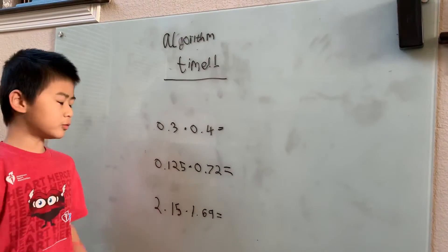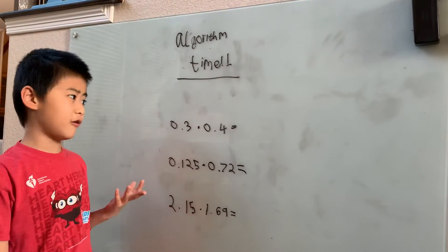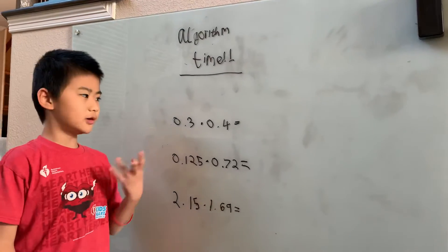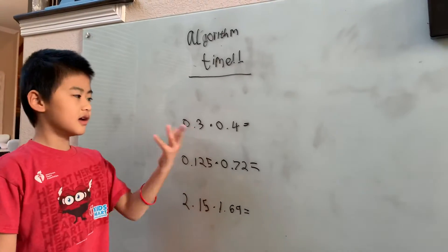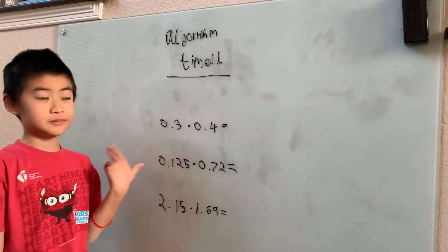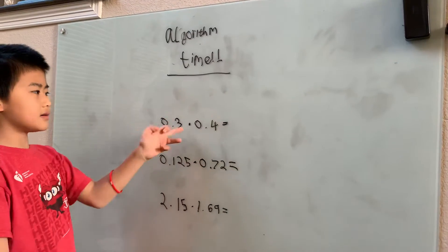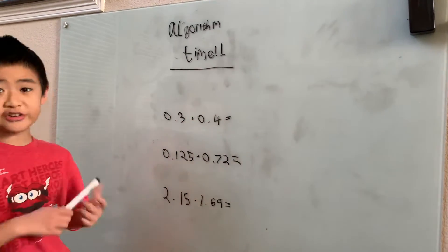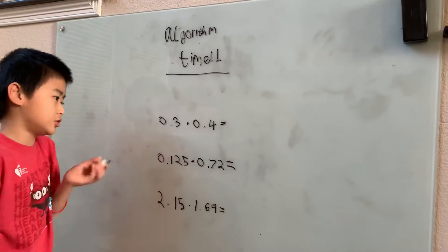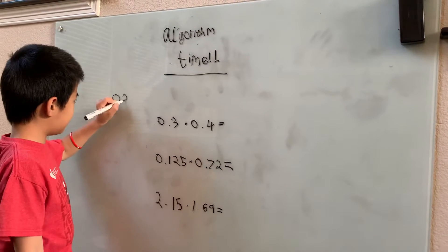Today we're going to explain how the process of multiplying decimals is really no different than the process of multiplying integers, by using our multiplication algorithm, since this works with decimals too, only in a slightly different way.